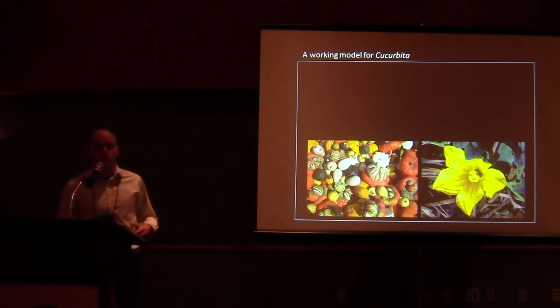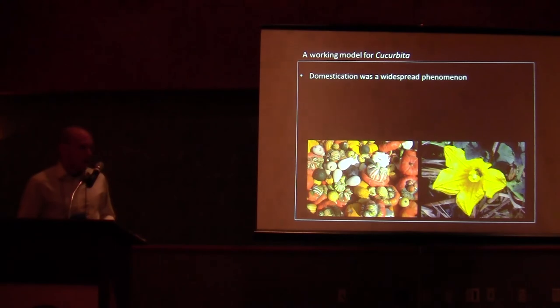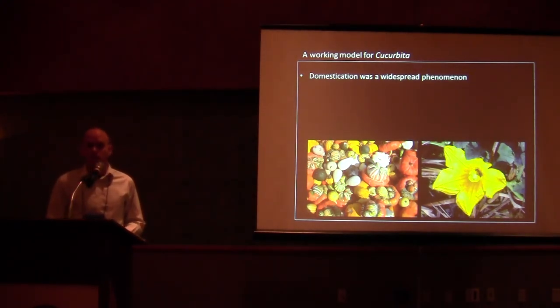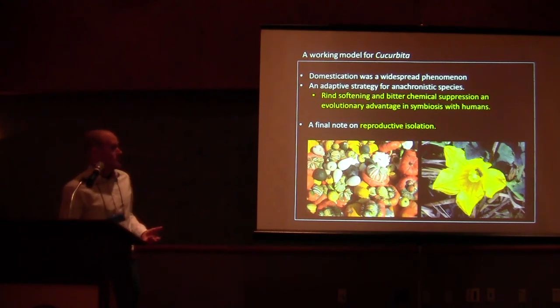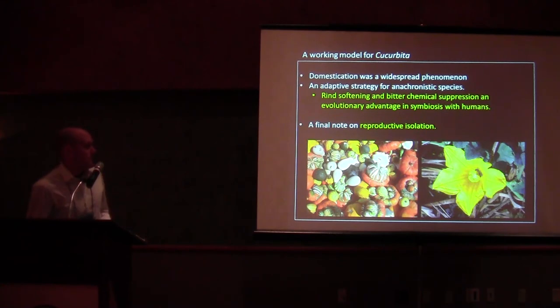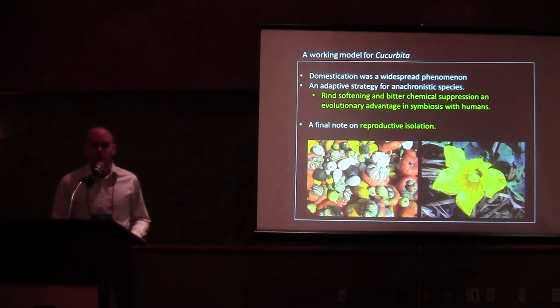Just to kind of summarize a working model for cucurbita based on all this information, I would argue that domestication was a widespread phenomenon. We know that because there were six or more independent domestic lineages. As the case with Romero's Cave illustrates, even within some of these individual species, it was a geographically and temporally widespread and culturally widespread process, the emergence of these domestic lineages. I would argue that domestication, colonizing the human landscape, was an adaptive strategy for what was fundamentally an anachronistic species on the decline. So rind softening and bitter chemical suppression during domestication was ultimately an evolutionary advantage as these gourds were going into a symbiotic relationship with humans.